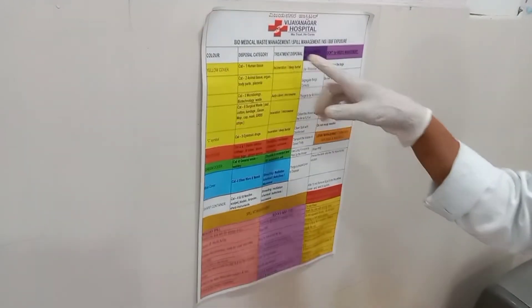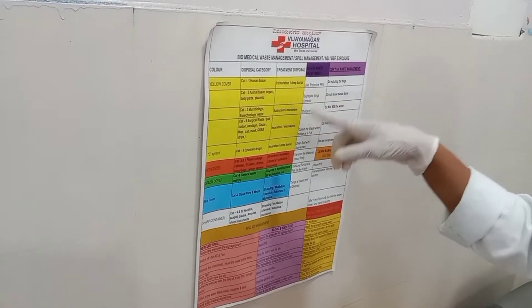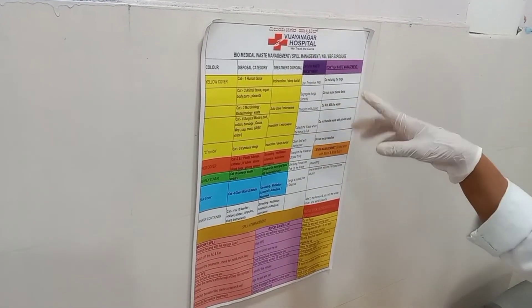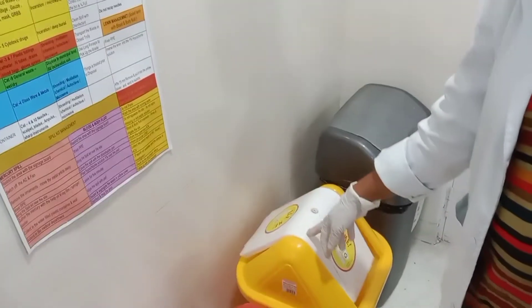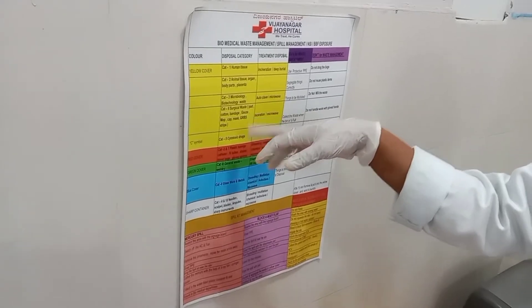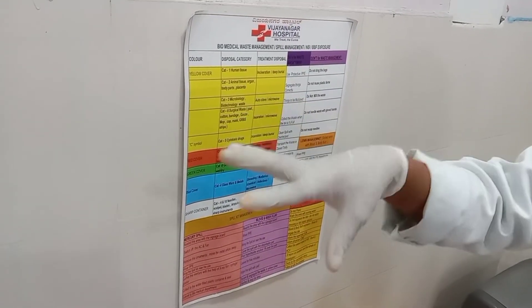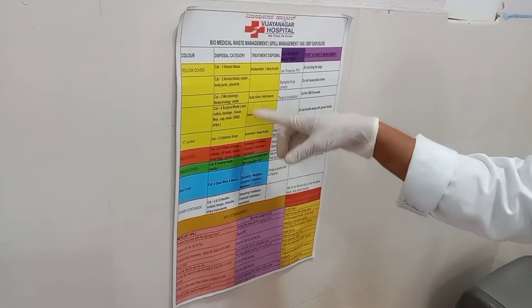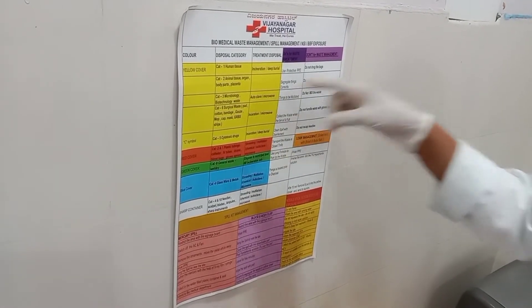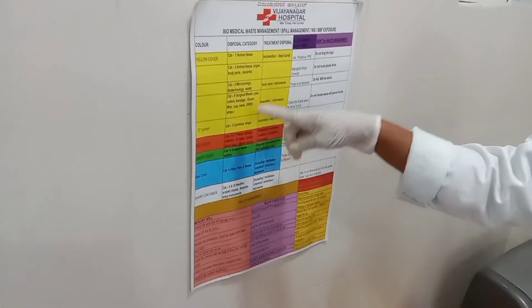Whatever is extracted in a laboratory — microbiology, biotechnology — all that kind of waste can also be discarded into the yellow bin. Any surgical waste and all soiled waste will also be discarded into the yellow bin.